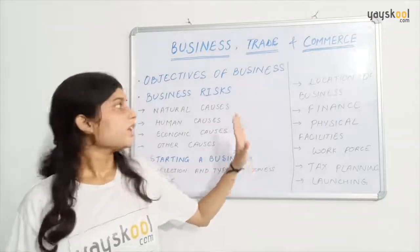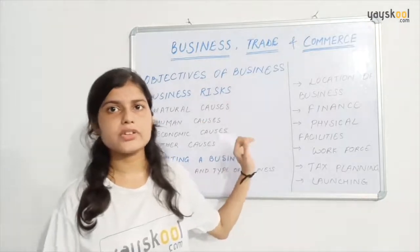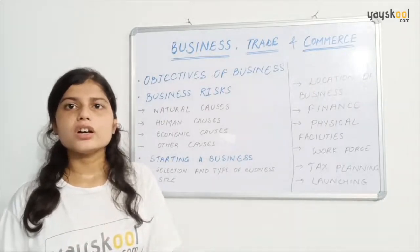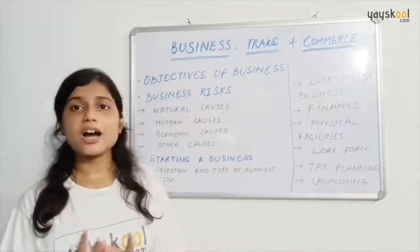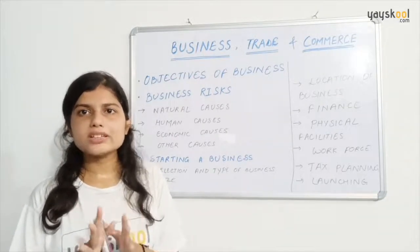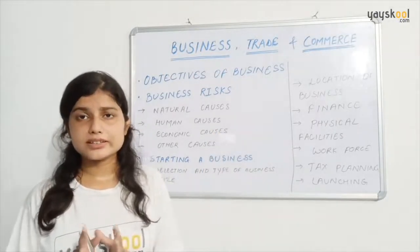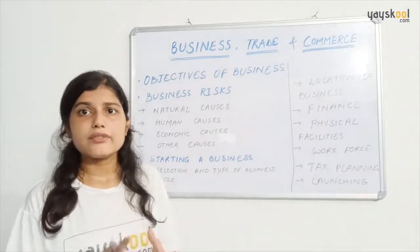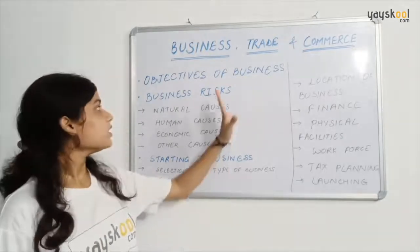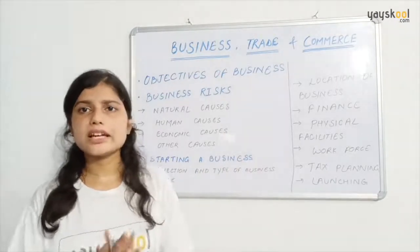Now let's look at the causes of risks. The first is natural causes. Natural causes are those causes of risk which are uncontrollable factors — those factors which are not in the hands of businessmen. Natural causes include natural calamities, floods, theft, fire, and any kind of natural disasters.